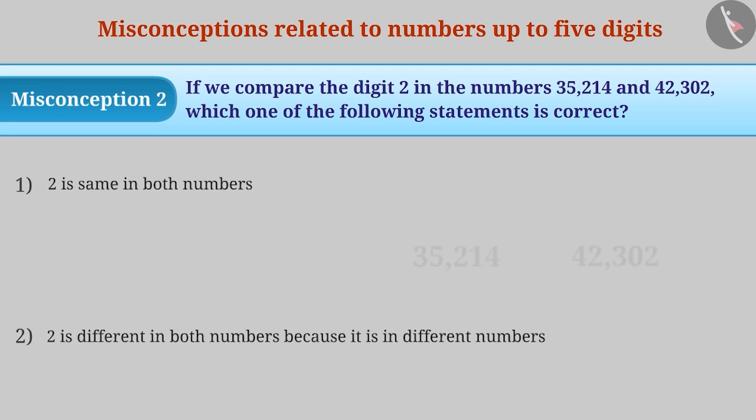Some students fail to understand the concept of place value. So, they think that the 2 in the hundreds place is equal to the 2 in the units place or ones place. This is a misunderstanding.